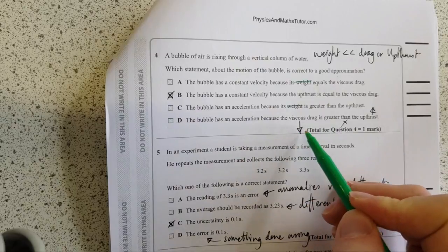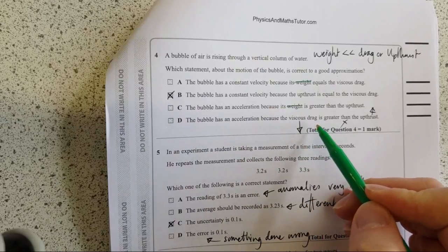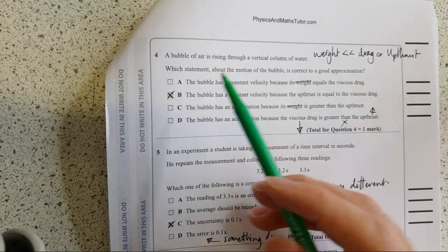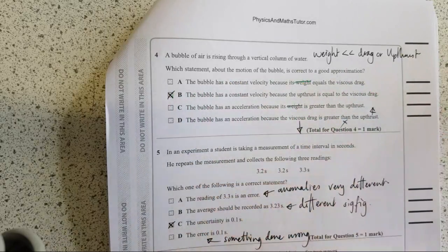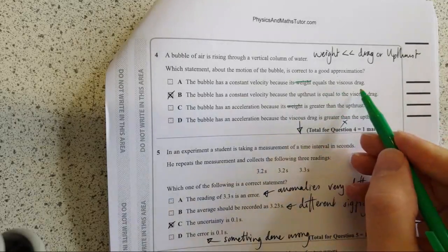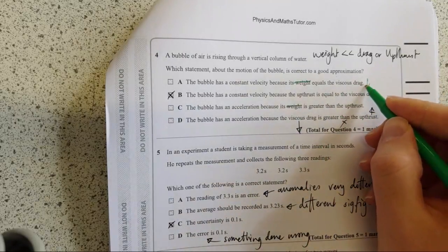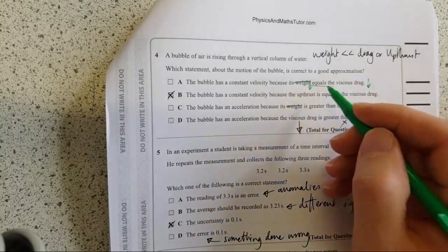The bubble has an acceleration because viscous drag is greater than the up thrust. Again, if that was the case, it wouldn't be going up. Would it? The drag is downwards. The next one. The bubble has a constant velocity because weight equals a viscous drag. It's not going to be that one either. They are both happening in the downwards direction, so it's not going to be this one.